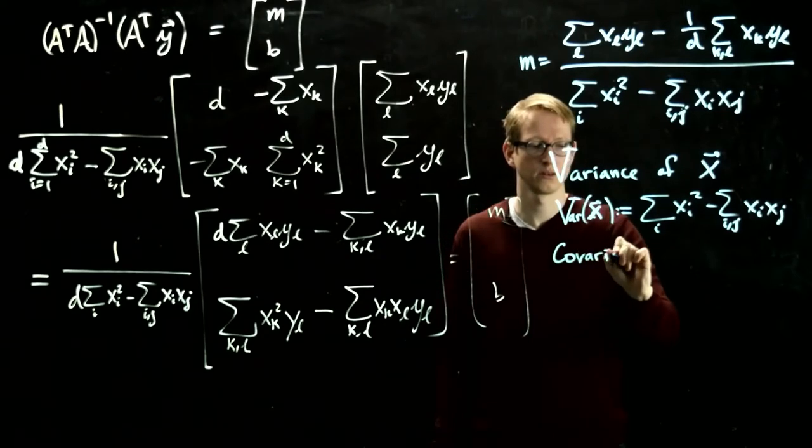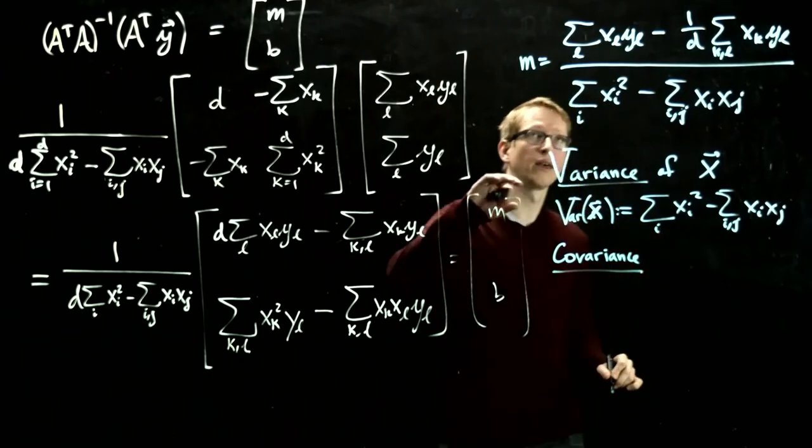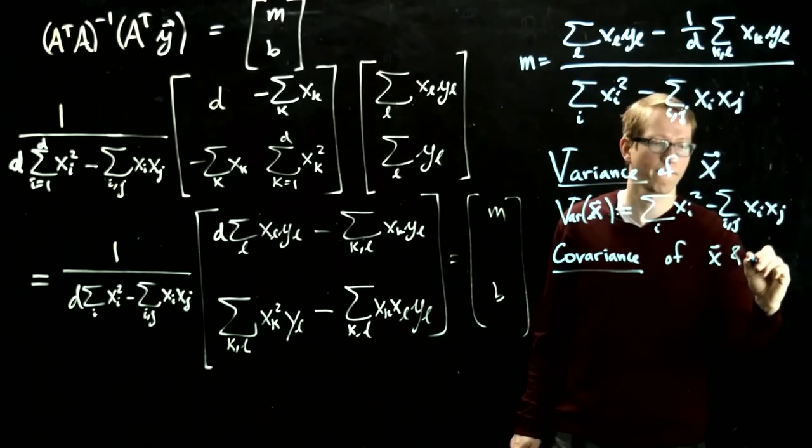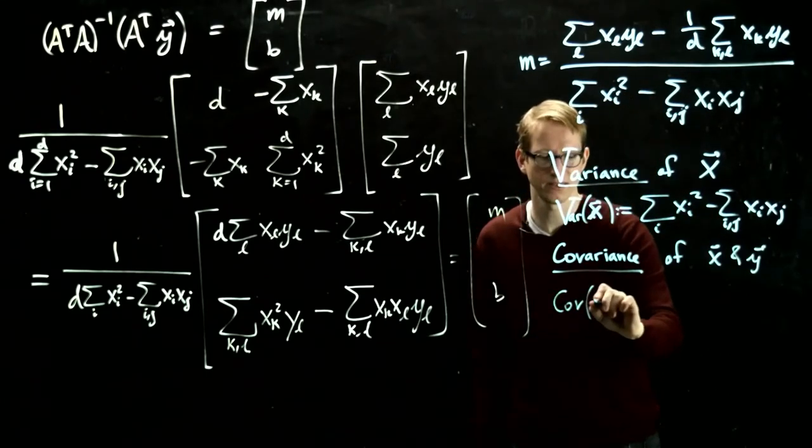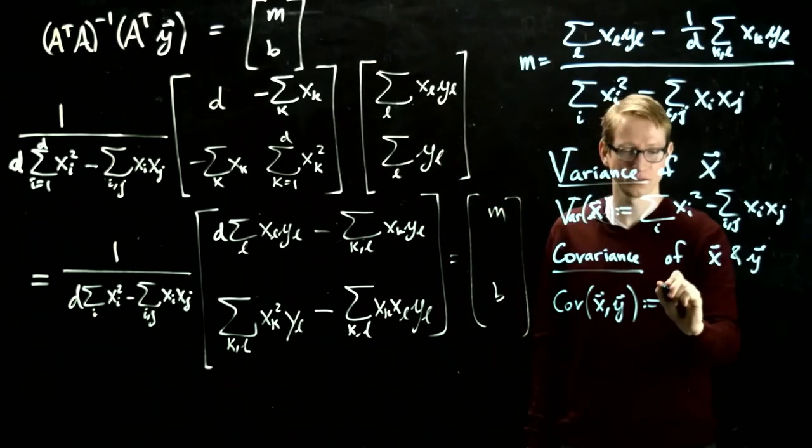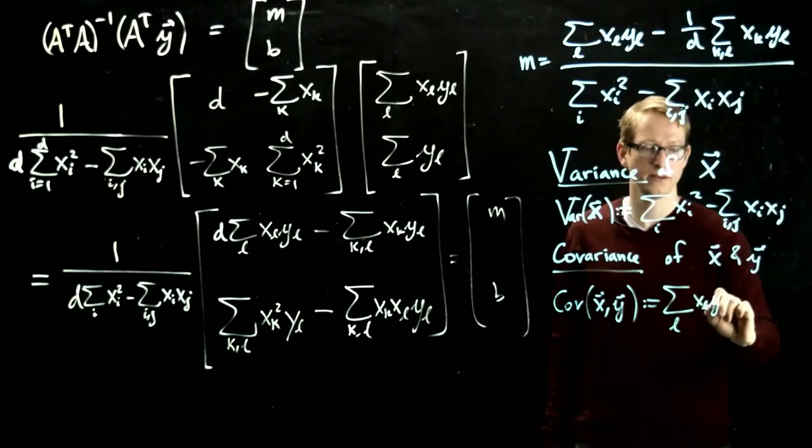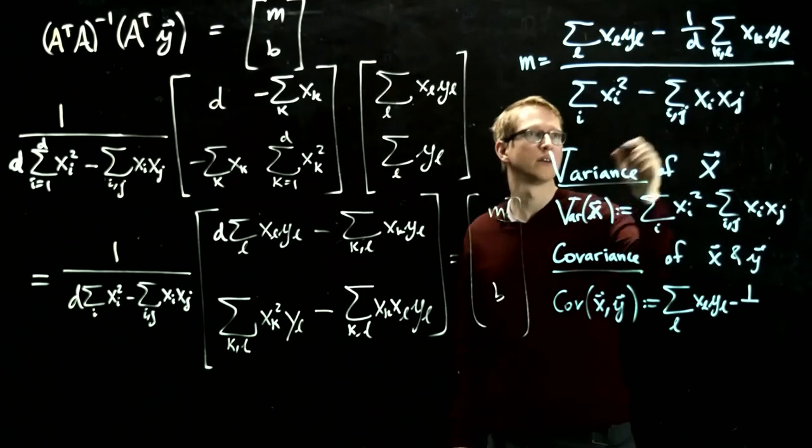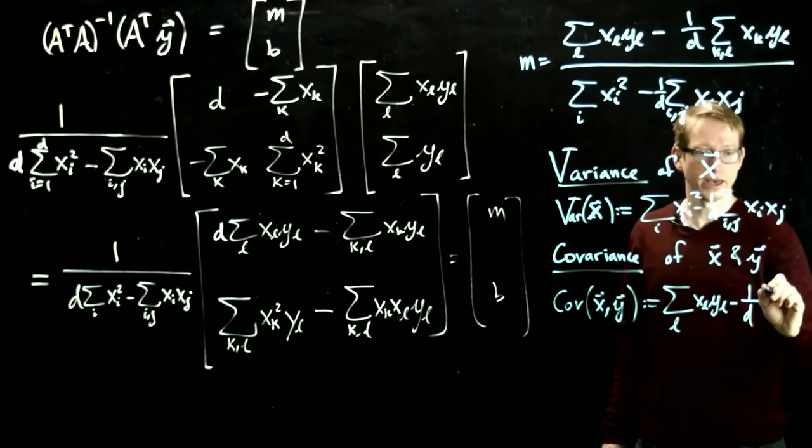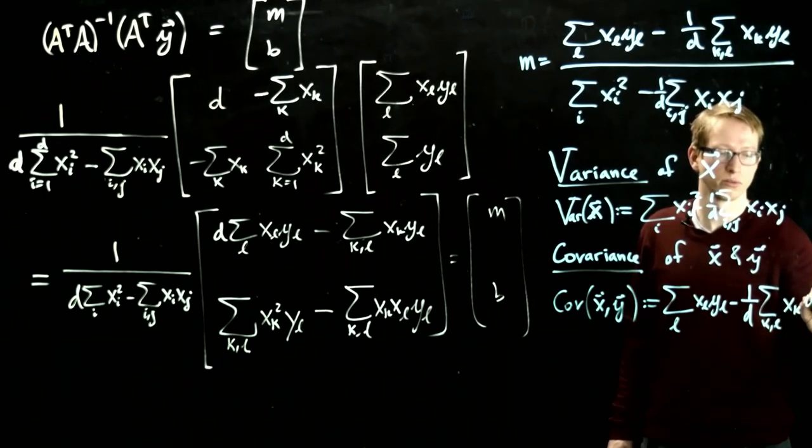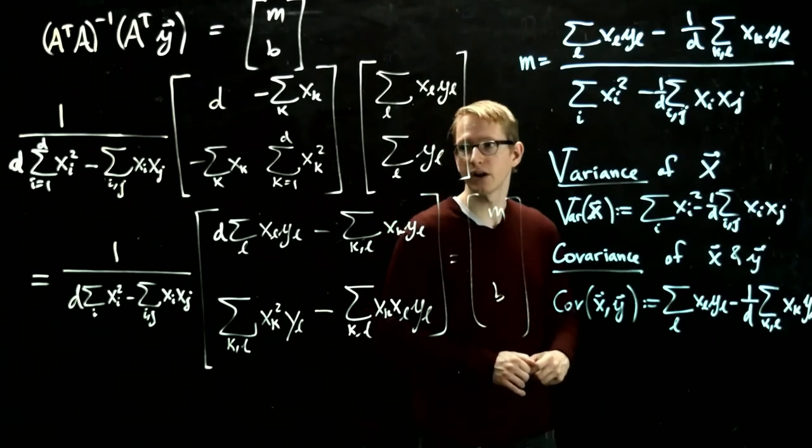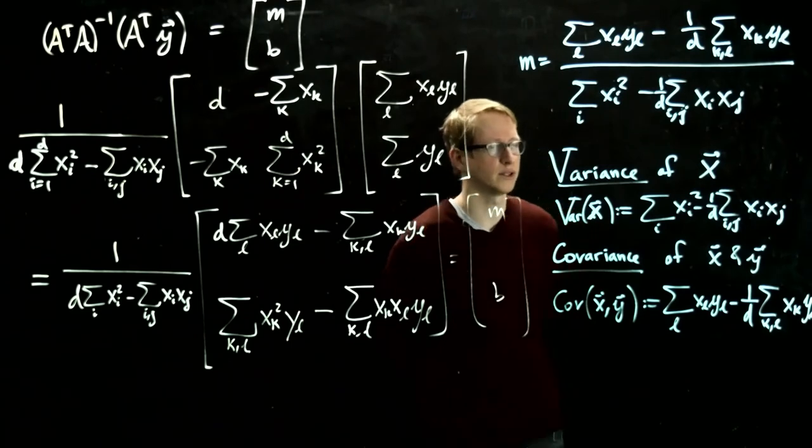And the covariance involves two data sets, our x's and our y's, so it's of x and y. And this is defined by, I think, you know, people have different notation, I don't know what the notation is, I don't really care. But it's this expression on top. So this is sum l, xl yl, minus 1 over d, oh, did I forget a 1 over d? I did, this should have a 1 over d here. Minus 1 over d, xk yl. That's an l subscript on that last y.